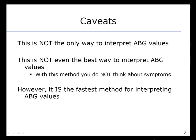There are several caveats about this. First of all, this is not the only way to interpret arterial blood gas values. In fact, this is not even the best way to interpret arterial blood gas values, because with this method, you do not think about symptoms, which is definitely wrong from a clinical perspective. However, this method is the fastest method for interpreting arterial blood gas values if you are in an examination situation.